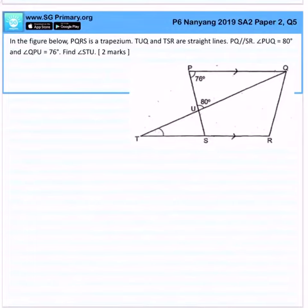In the figure below, PQRS is a trapezium. TUQ and TSR are straight lines. PQ is parallel to SR. Angle PUQ is 80 degrees and angle QPU is 76 degrees. Find the angle STU.